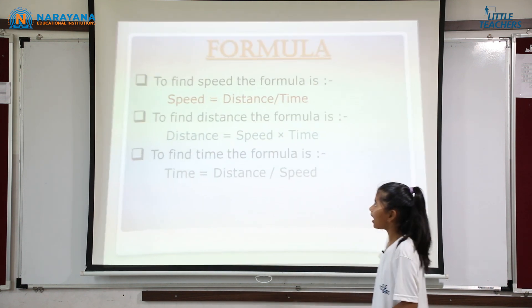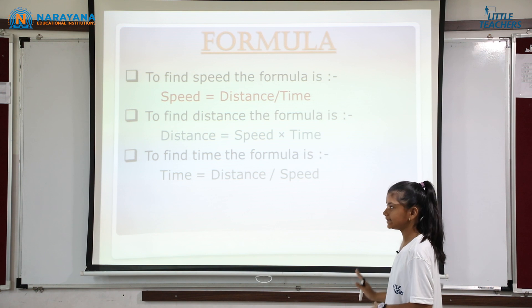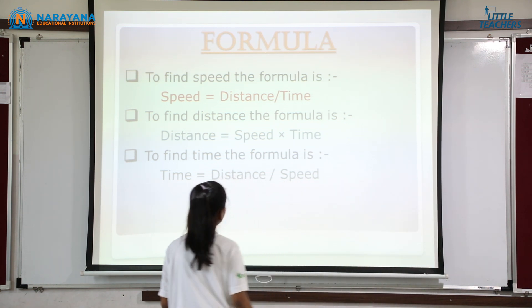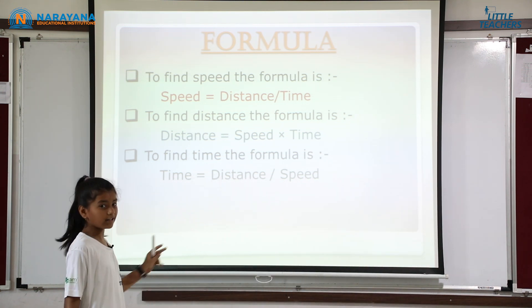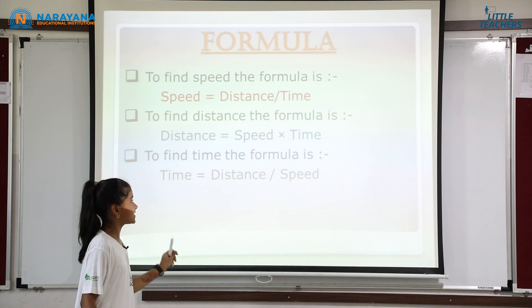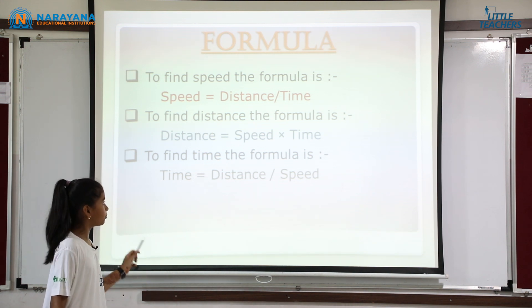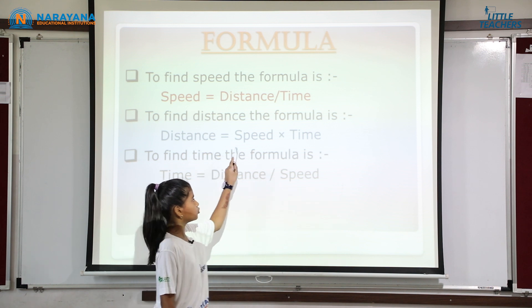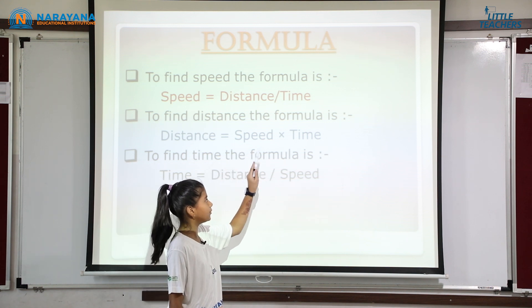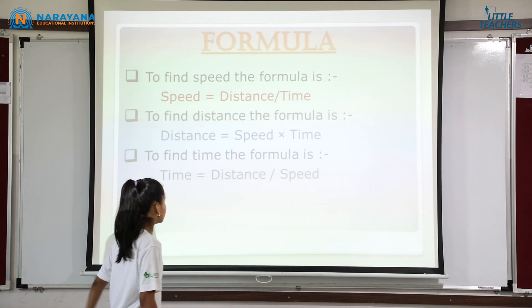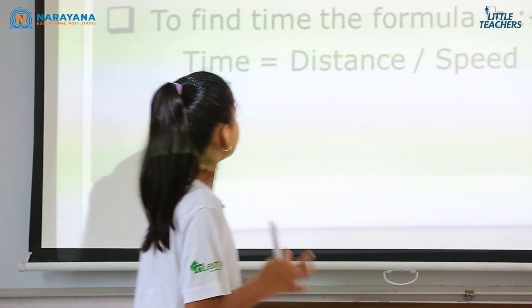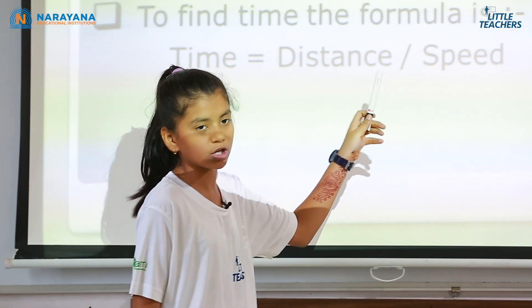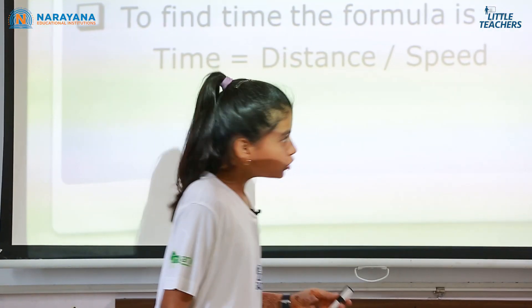Now let us learn the formulas. The main formula for speed is: Speed = Distance / Time. The formula for distance is: Distance = Speed × Time. The formula to find time is: Time = Distance / Speed.